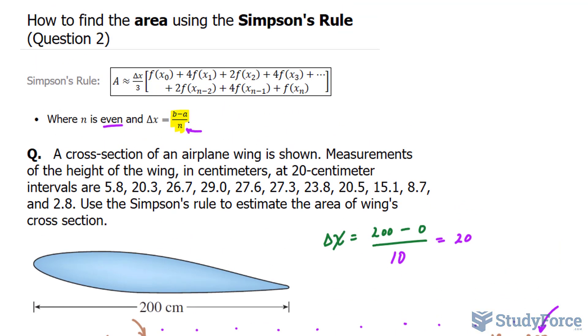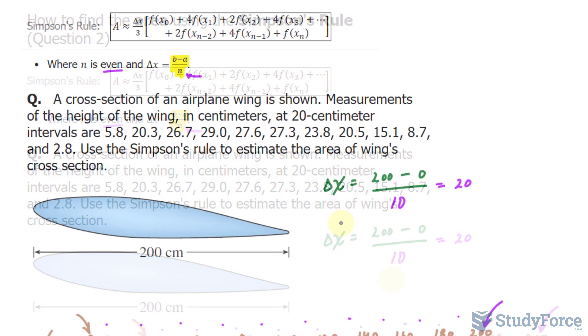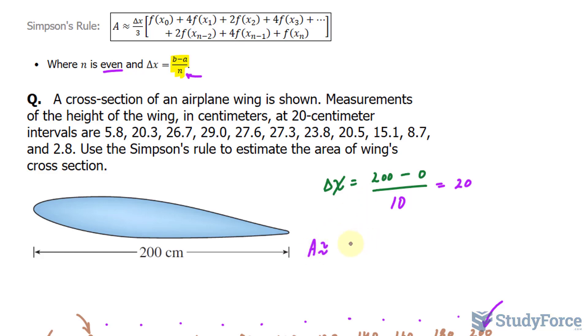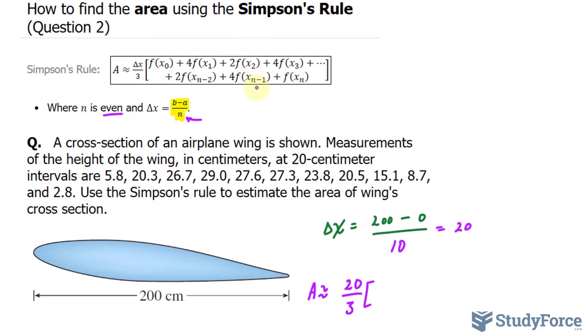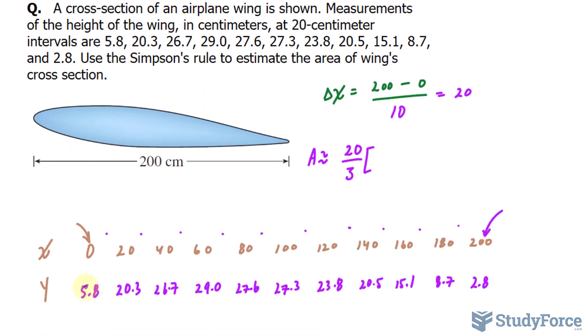Now that we've found 20, we can substitute that into Simpson's formula, and we'll do our work right underneath. We have the area is approximately equal to 20 over 3 multiplied to this. This is in function notation. You might be used to seeing this with Y's instead. All this is saying is, what is the Y, or the Y coordinate, at our very first observation? And that's 5.8.